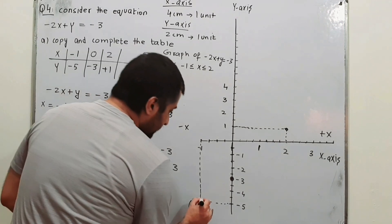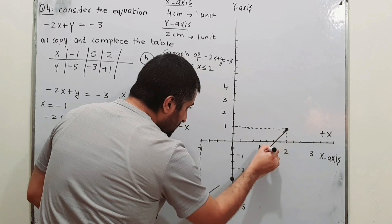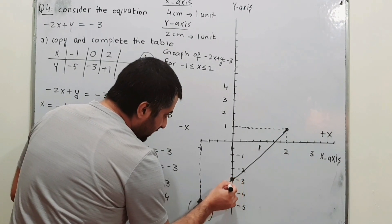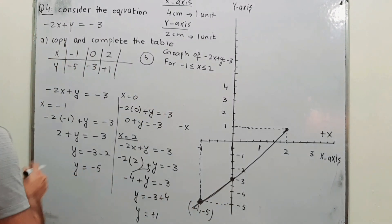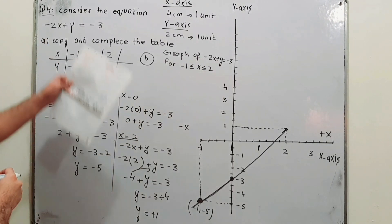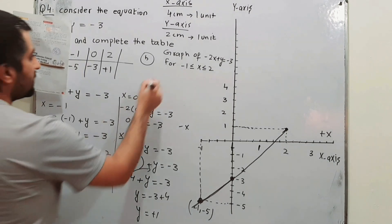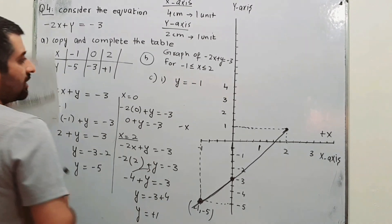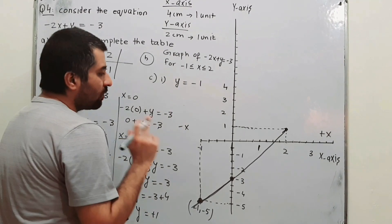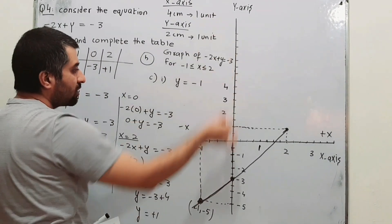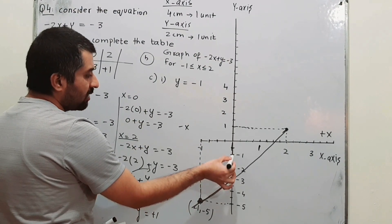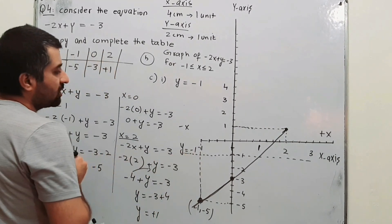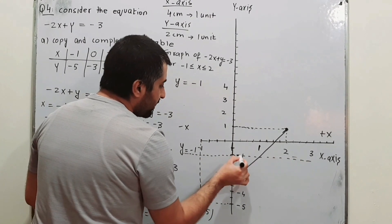Join these three points with a straight line to complete the graph. This line represents the graph of minus 2x plus y = minus 3. Part B is now solved. For Part C1, on the same axes draw the graph of y = minus 1. Locate minus 1 on the y-axis and draw a horizontal line through it.